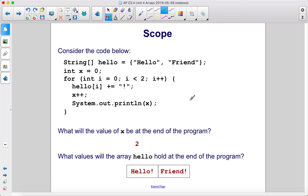The value of x will be 2 at the end of the program. We've declared x to be equal to 0 here. And then each time this loop runs, it increments x by 1. And this loop runs exactly 2 times.